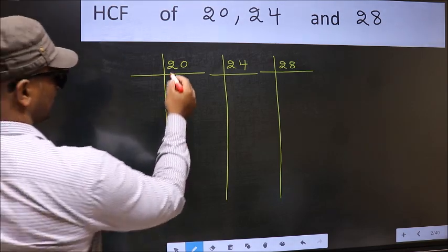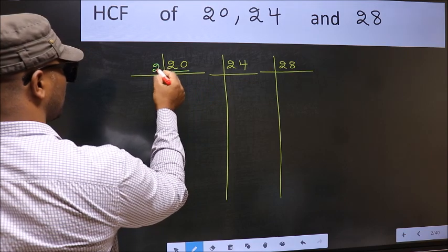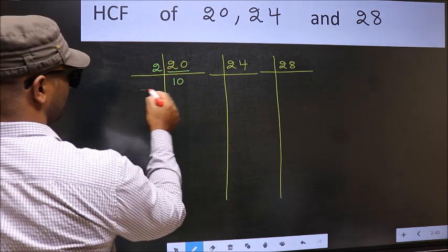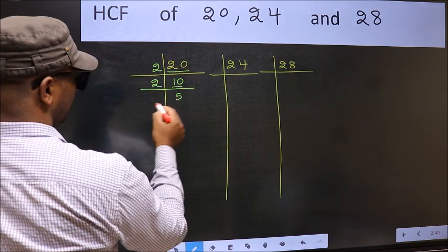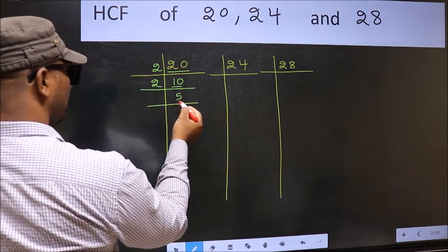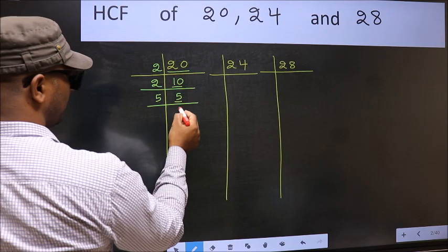Now here we have 20. 20 is 2 times 10. Now 10. 10 is 2 times 5. Now we have 5. 5 is a prime number, so 5 times 1 is 5.